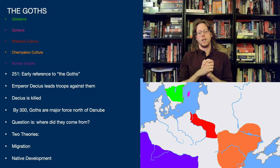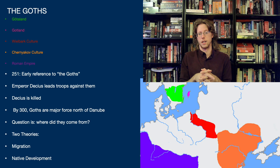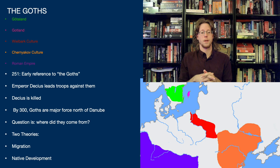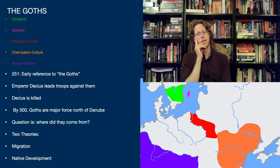On this map, the purple is the Roman Empire. The orange is the Santana de Mureș–Chernikov culture, and the red is the Vilbark culture. The first official mention we really have of the Goths in Roman sources is around 251 CE. In 251, we have some early references to people called the Goths — Emperor Decius leads troops against them and is killed fighting them. By 300, the Goths are a major force north of the Danube.